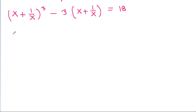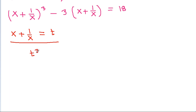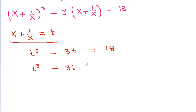If we take x plus 1 by x equal to t, then it becomes t cubed minus 3t equal to 18, and rearranging, t cubed minus 3t minus 18 is equal to 0.